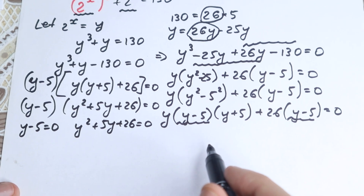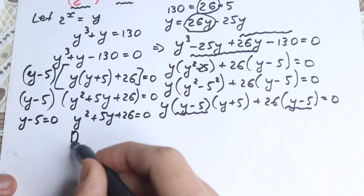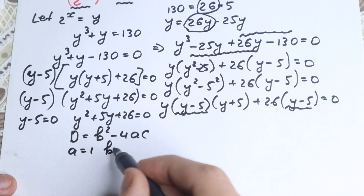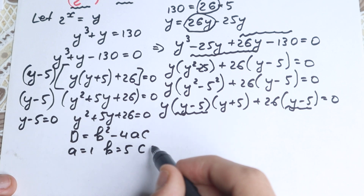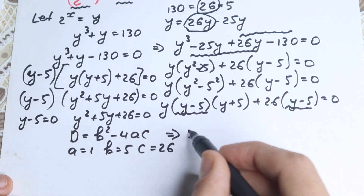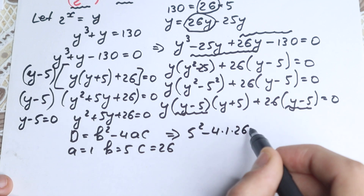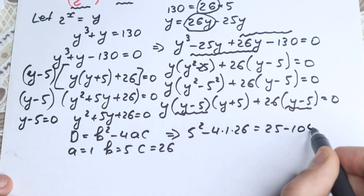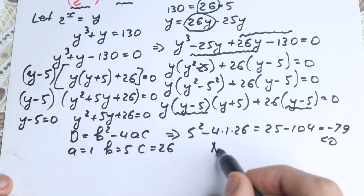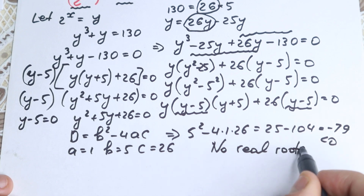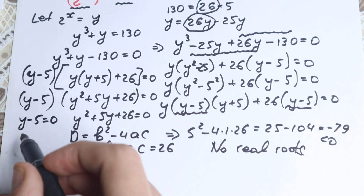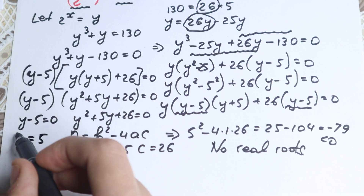The second factor gives the quadratic equation: y squared plus 5y plus 26 equals 0. Let's solve it using the discriminant formula: D equals b squared minus 4ac. Here a equals 1, b equals 5, c equals 26. Plugging in: 5 squared minus 4 times 1 times 26 equals 25 minus 104 equals negative 79, which is less than zero. So there are no real roots. On the left-hand side, y minus 5 equals 0 gives y equals 5 — this is our solution.